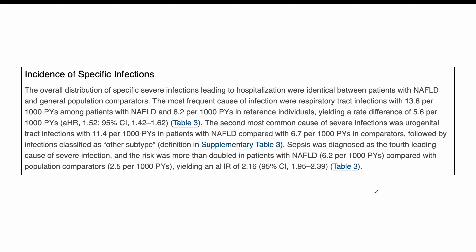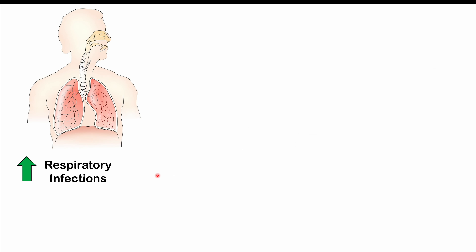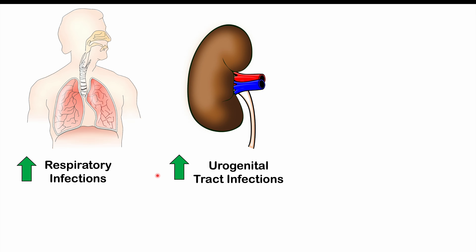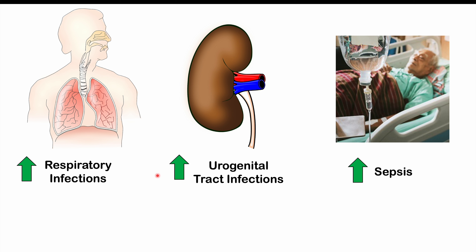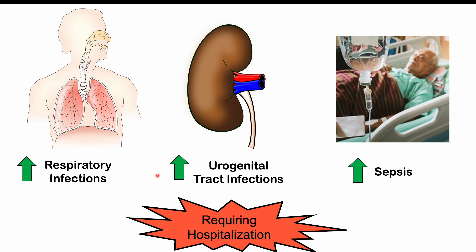The types of infections that NAFLD patients were more likely to experience included, most commonly, respiratory tract infections. Other infections included urogenital tract infections, sepsis, and gastrointestinal infections. These infections were severe enough to require hospitalization — so this data does not account for infections that may occur outside of the hospital setting, making these findings even more significant.